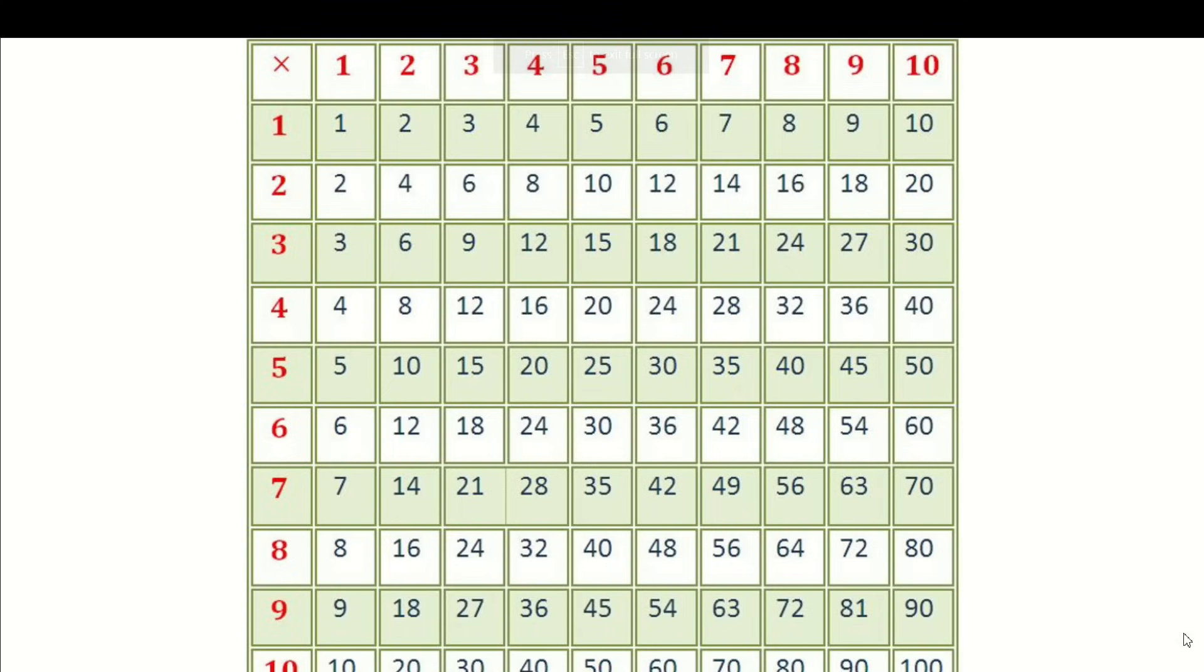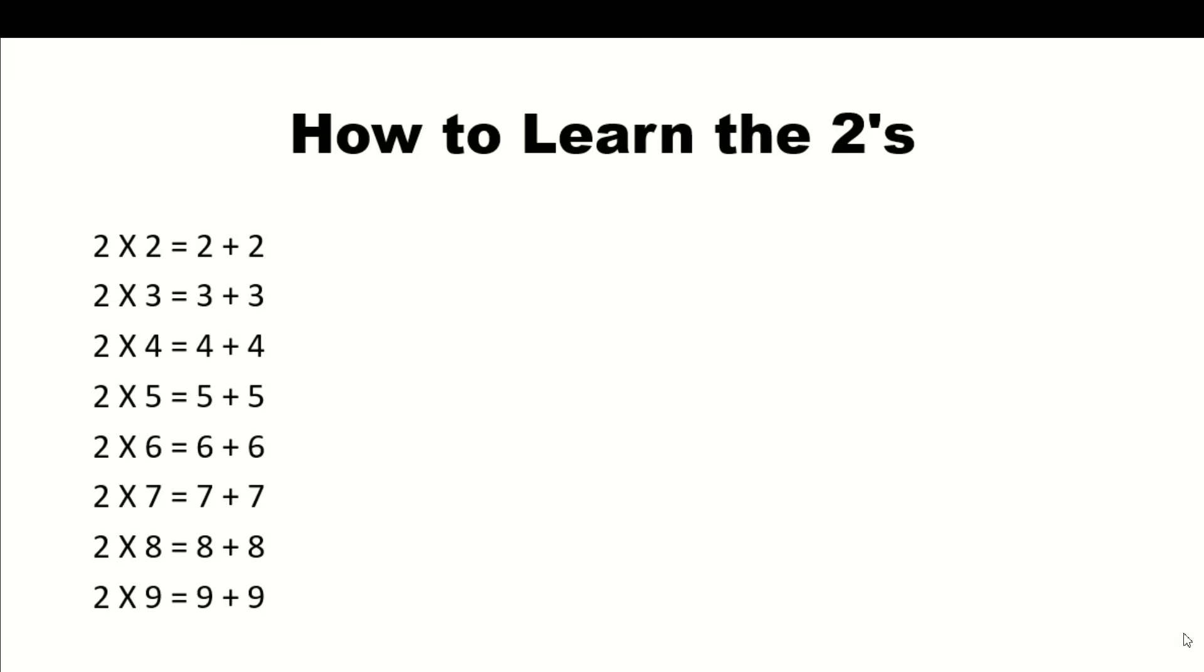Let's take the first one for example. The ones, you don't really have to memorize those, do you? Because one times any number is the number. One times eight is eight. One times nine is nine. So we can kind of cross those off and boom! Now we're down to a nine by nine grid here.